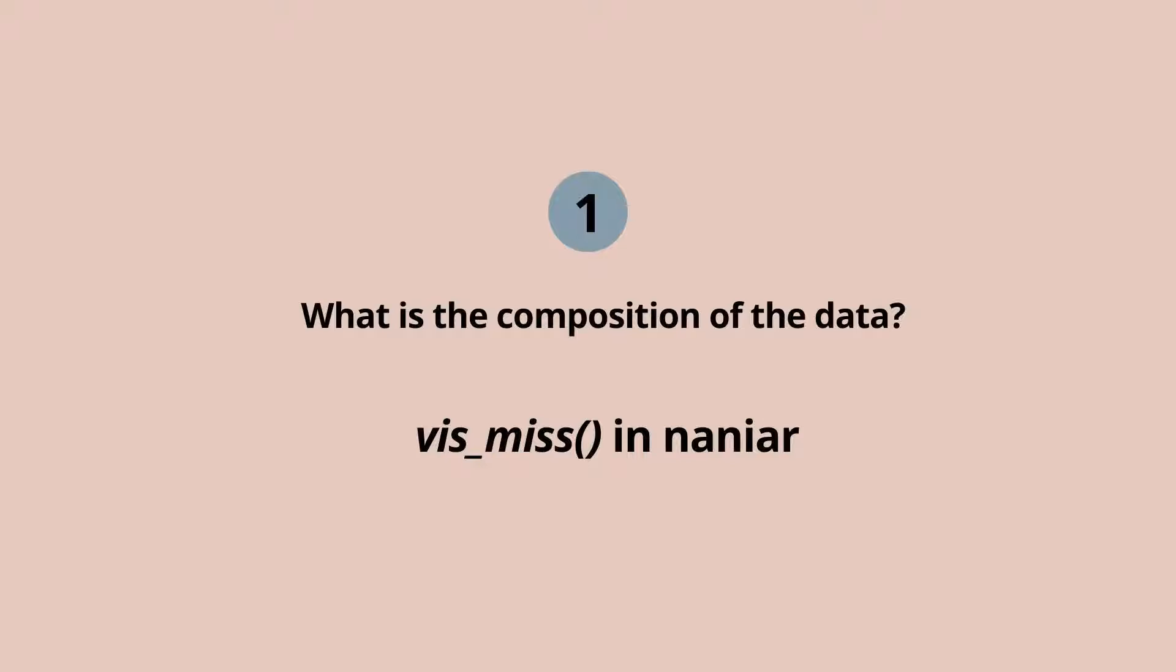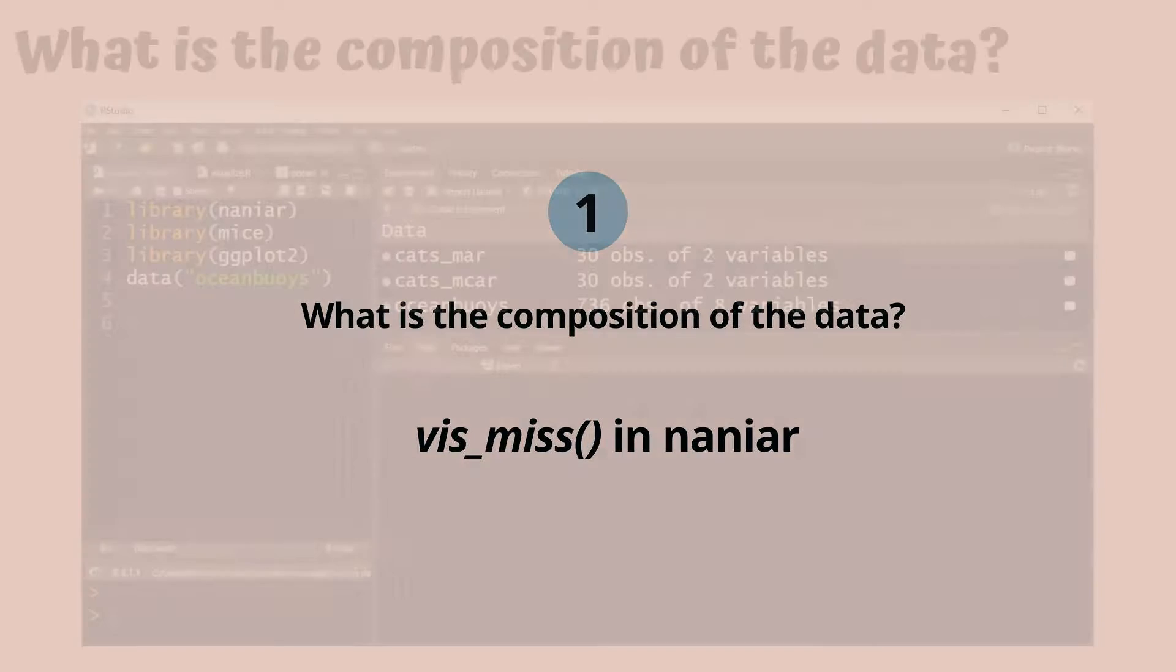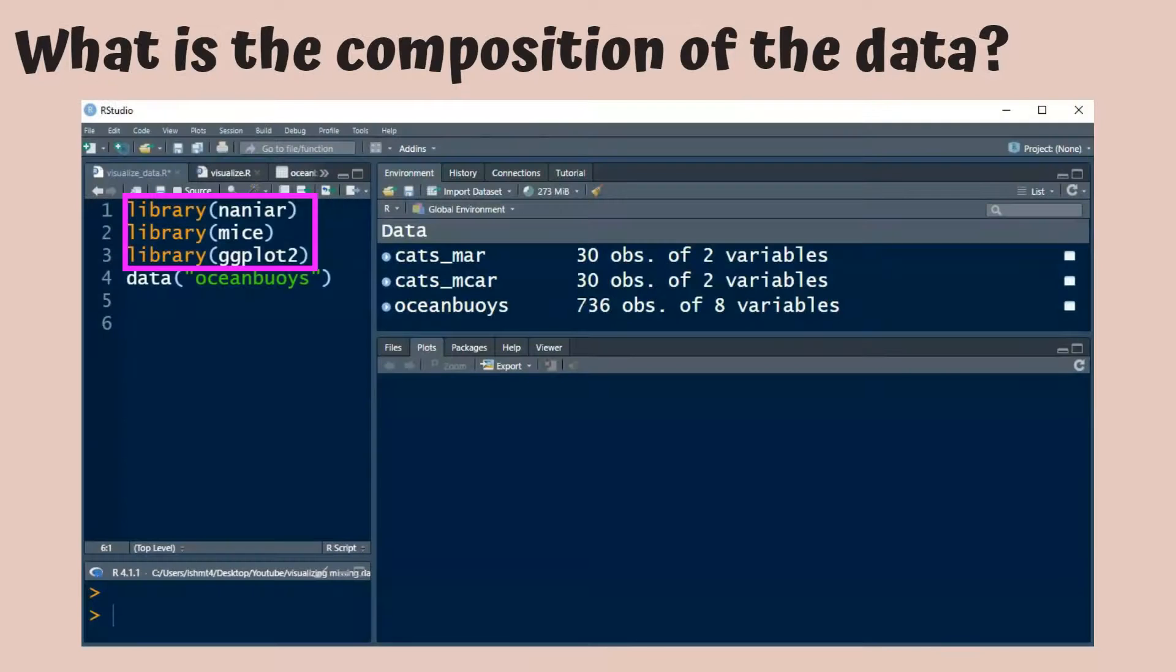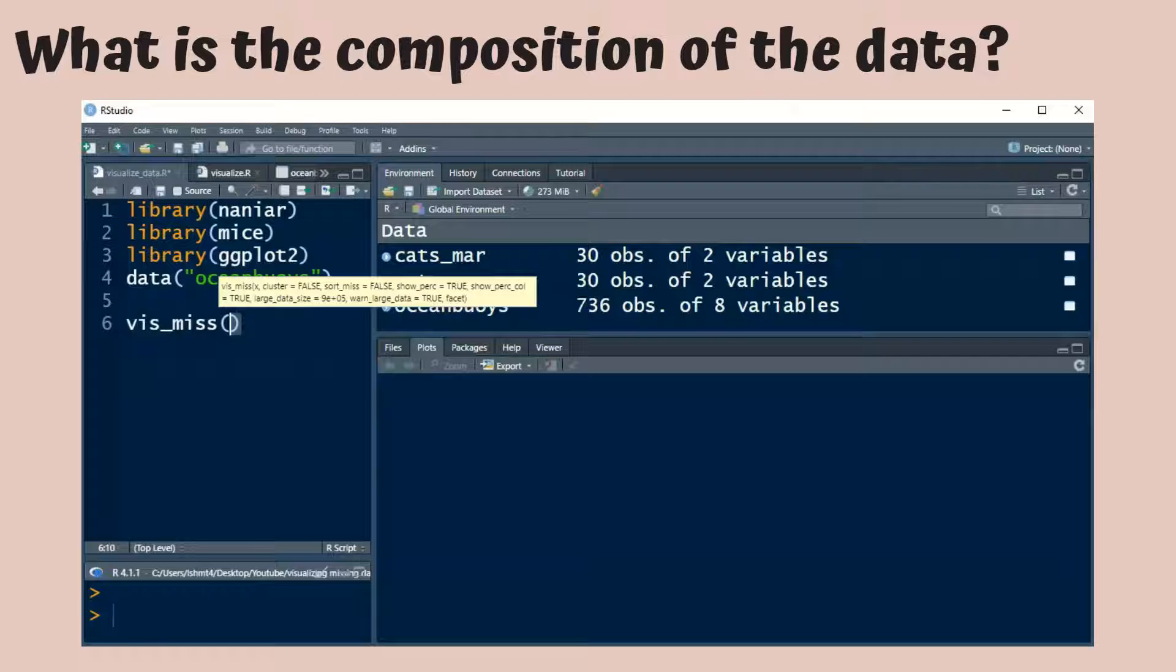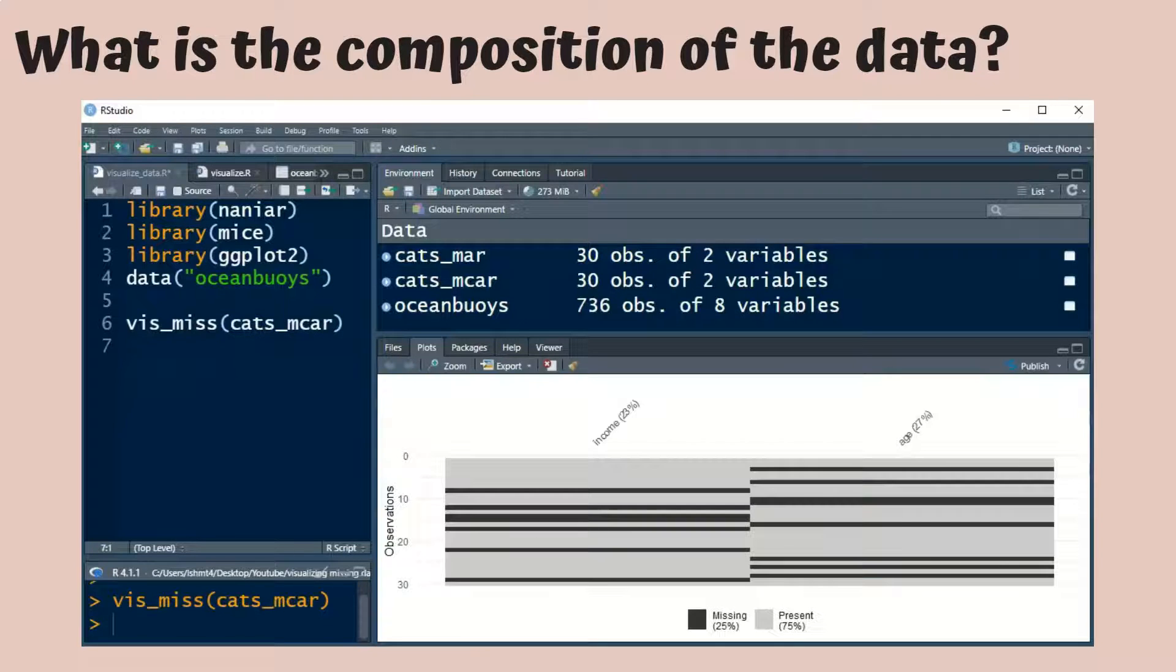We will first look at how to visualize the composition of the data. I've loaded the packages that I need and also the three data sets. The viz underscore miss command from the Narniar package gives you a picture of the data set. So, here we're looking at the cats MCAR data set. It displays, in gray, the observed values, and in black, the missing values. At the bottom, it tells you overall how much of the data is missing. And at the top, it tells you the percentage of missing observations for each variable.